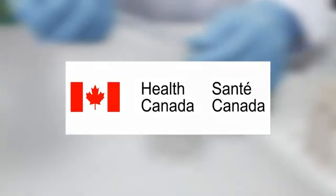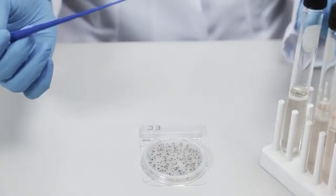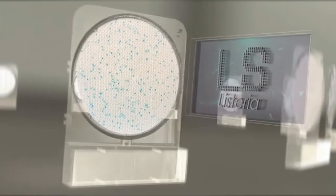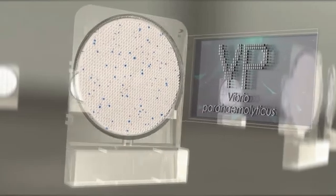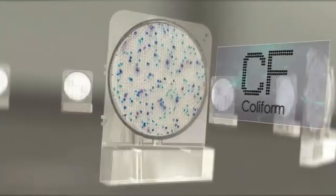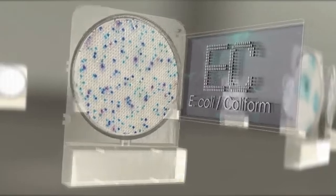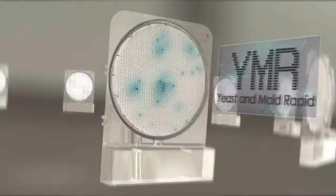Compact Dry has the widest available parameters, currently with a total of 15 parameters which includes pathogens: Salmonella, Listeria, Vibrio Parahaemolyticus. Commonly tested parameters: Total Count, Coliform, E. coli coliform, Yeast and mold, Yeast and mold rapid, Staphylococcus aureus.